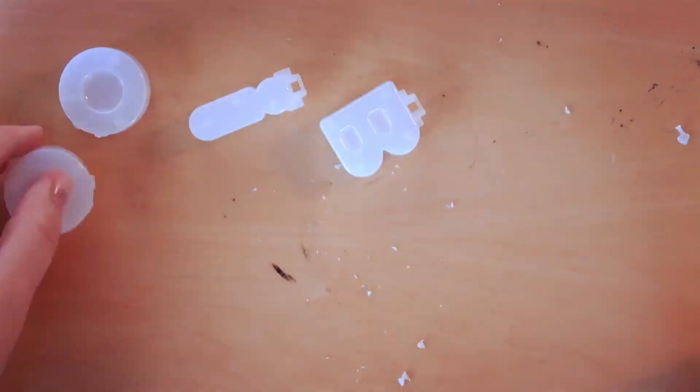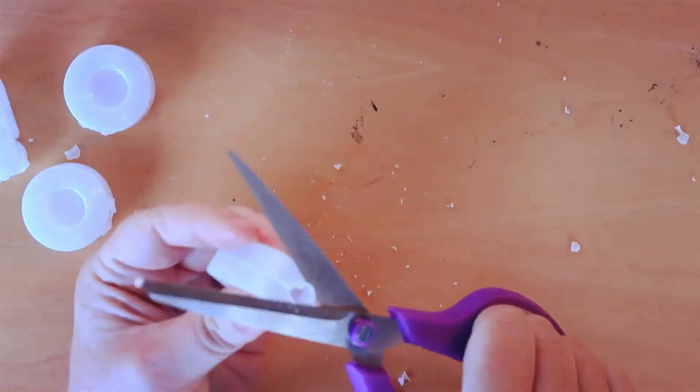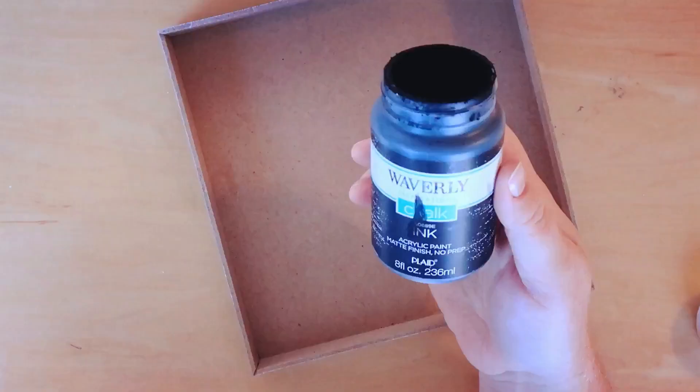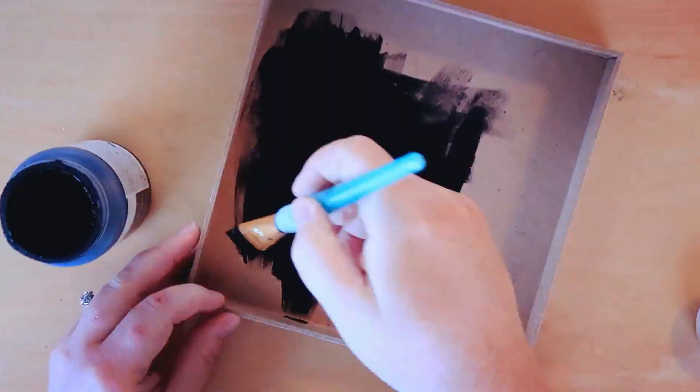Using this Gnome Rules sign, we're gonna be unwrapping it and taking off that little hanger and then we're gonna be giving it a coat of black paint. This is the Waverly paint.